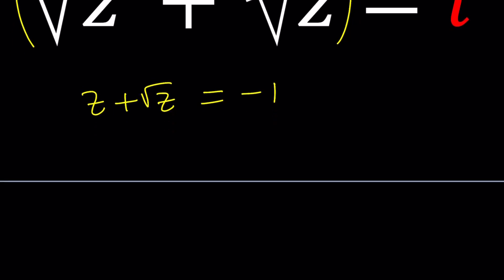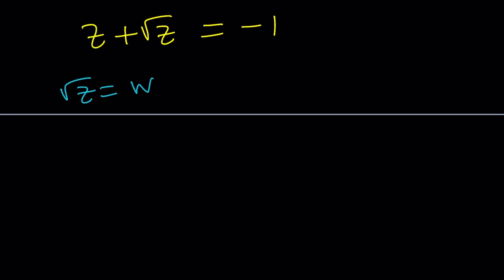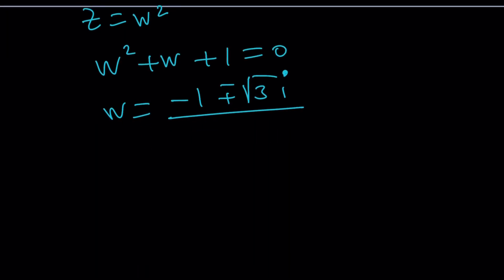Now, how do you solve for Z from here? Well, you can turn it into a quadratic equation. Set square root of Z equal to W, and then Z would be W squared, and then plug it in: W squared plus W equals negative one, or plus one equals zero. And then from here, you're going to find W equals negative B plus minus the square root of B squared minus four AC, which is going to give you the square root of three I, because that's negative three, and all of that is divided by two.